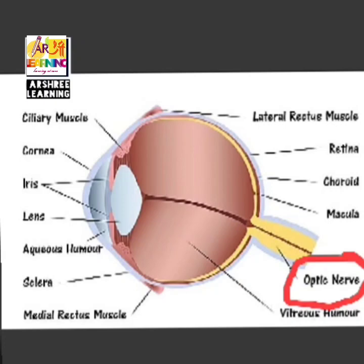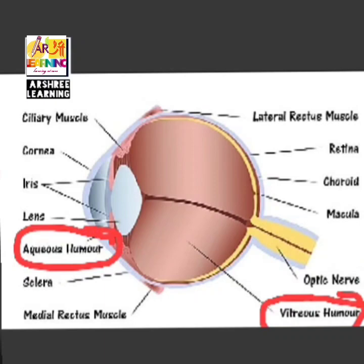There are two more parts: the vitreous humor and the aqueous humor. These are two liquids. The vitreous humor is a thick jelly-like substance that fills the back of the eye — its function is to control and adjust the size of the eye so that it does not shrink. The aqueous humor is the liquid in front of the eye that controls the shape of the lens and cornea and keeps the shape of the eye proper.